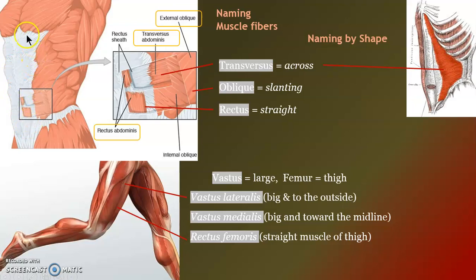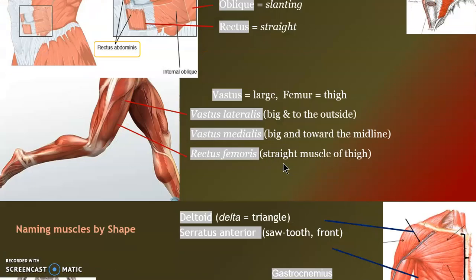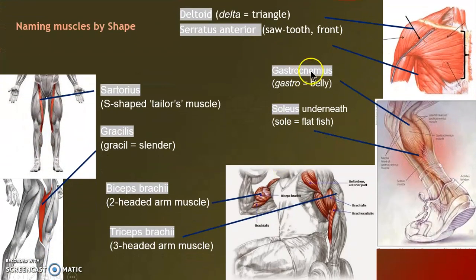Rectus — that's your six-pack. We all have a beautiful six-pack, by the way. I've dissected enough human bodies to know, but we have adipose covering them, so it's neat that it's all there all the time. Vastus means big, so we have a big lateral muscle, a big medial muscle, and one going straight down the middle — rectus femoris. Deltoid is triangular.